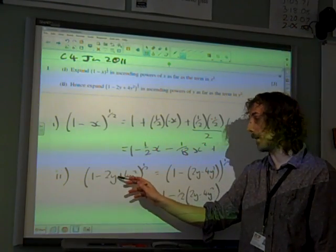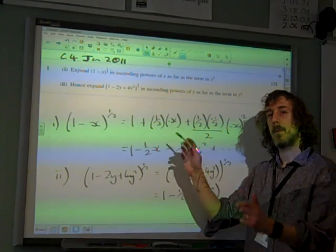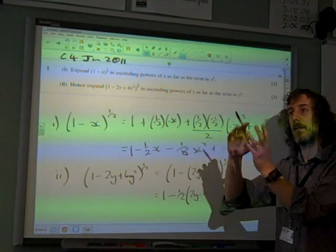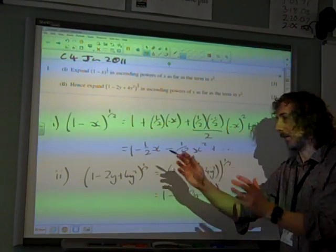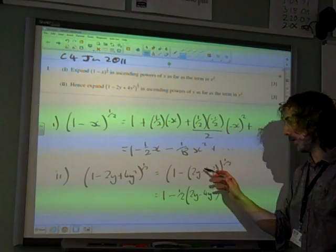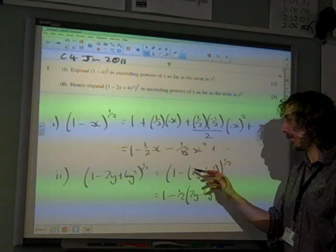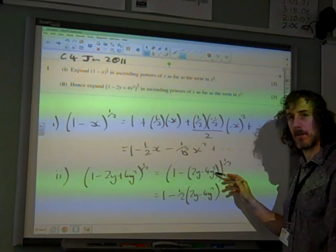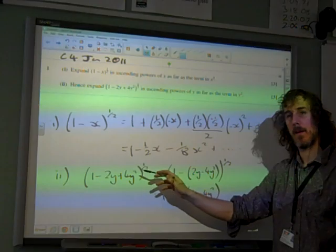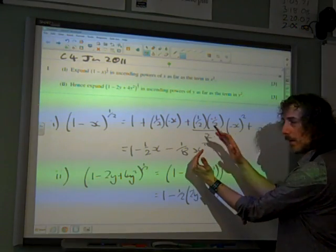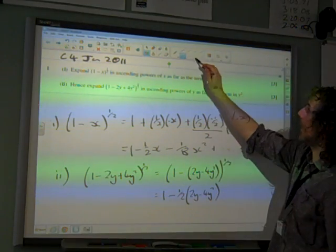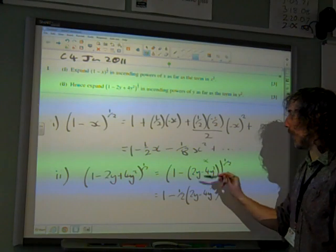Because we need to think of it as 1 minus a thing. Because the x is going to be the thing. Now, at the moment, this is 1 minus 2y plus 4y squared. But we want to have it just 1 minus something. So the something that we're taking away from 1 is 2y minus 4y squared. Because if you multiplied out that bracket, it would give you 1 minus 2y minus minus 4y squared, so then plus 4y squared. We had to have it 1 minus the thing, so that that could become our x.